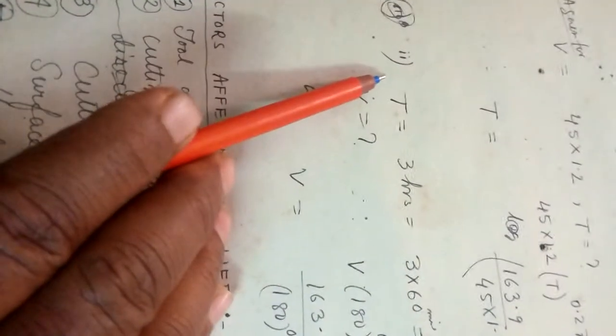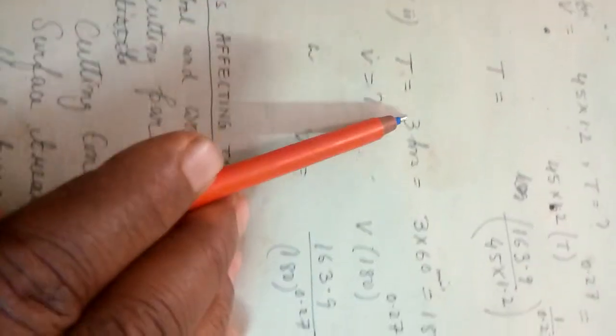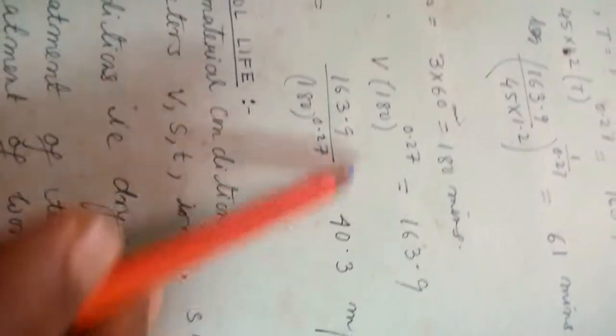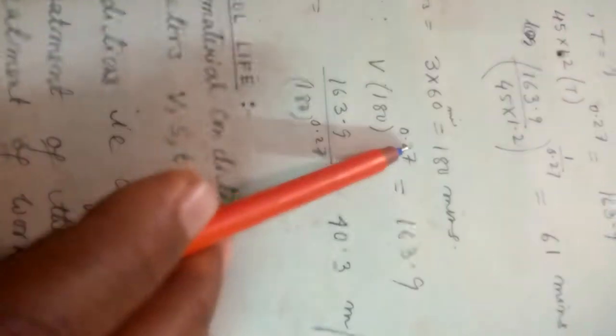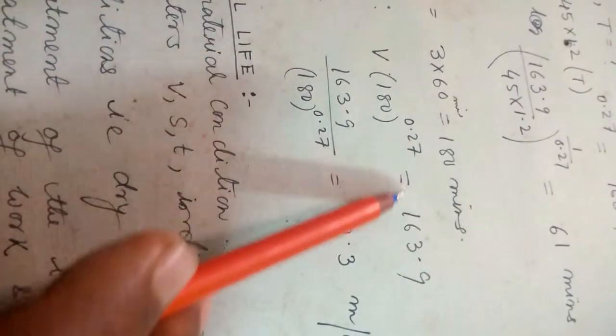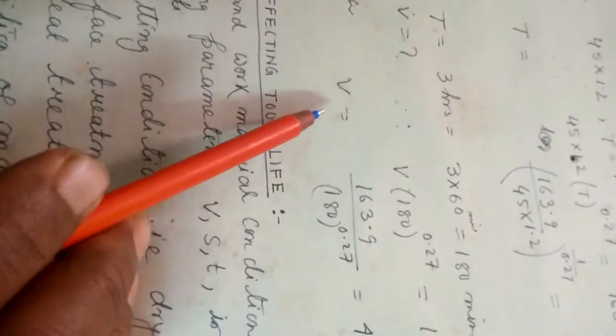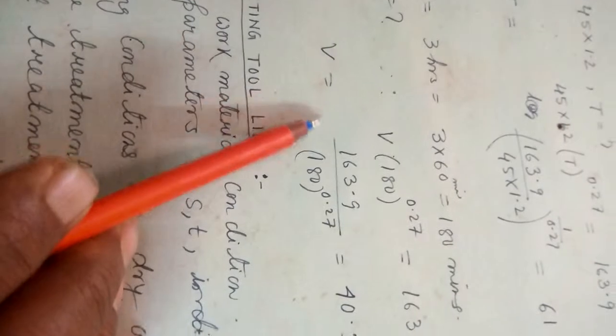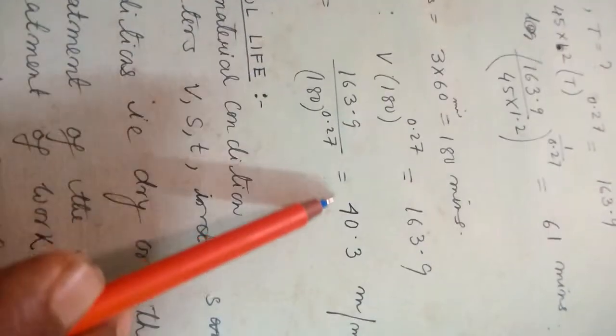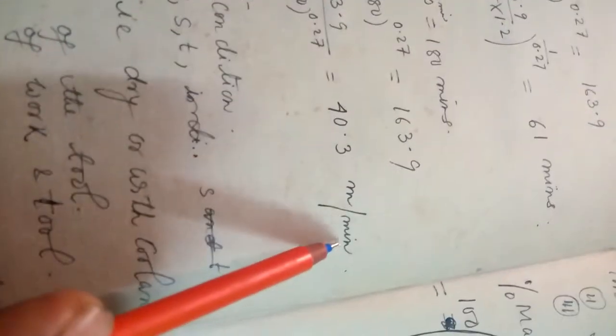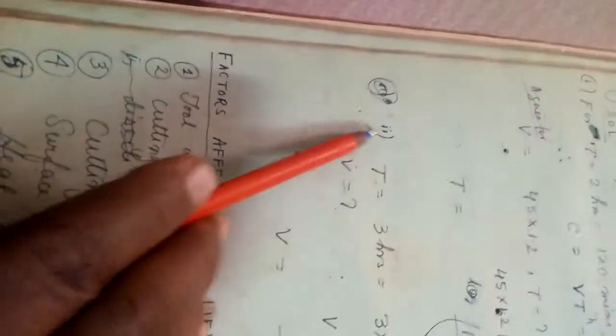For T equals 3 hours, 180 minutes, VT to the power 0.27, 180 to the power 0.27 equals 163.9. So V equals, what will be the V? It will be 40.3 meter per minute. This is the answer for second part.